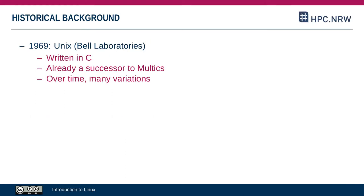The history of Linux really begins with its predecessor, which was called Unix. Unix was an operating system that has been around since the 70s and was written in the C programming language. Unix itself had predecessors, so the idea of an operating system goes back even further, and over time there have been many different Unix variants.